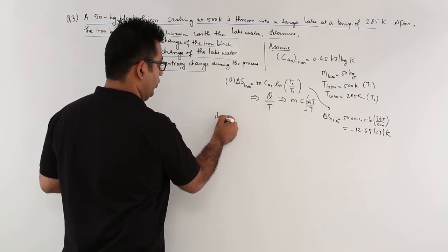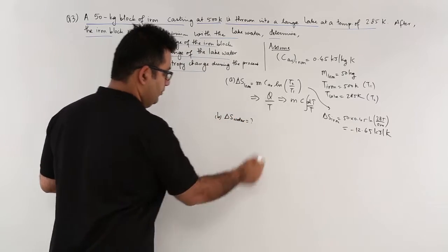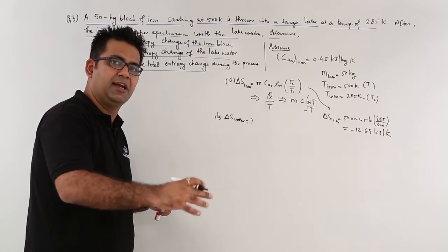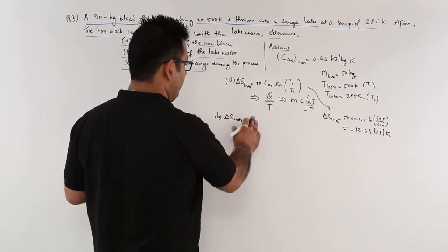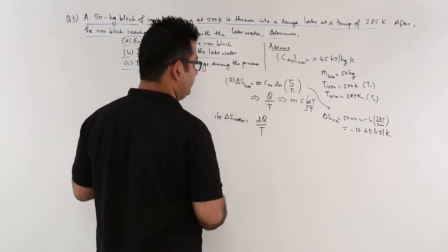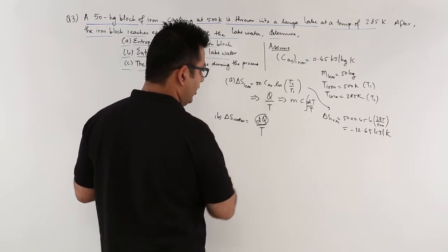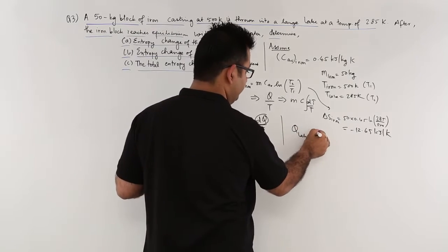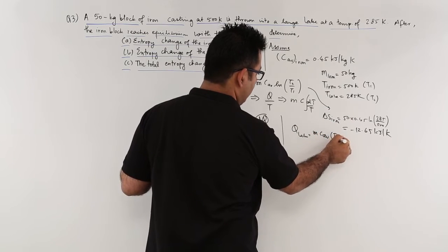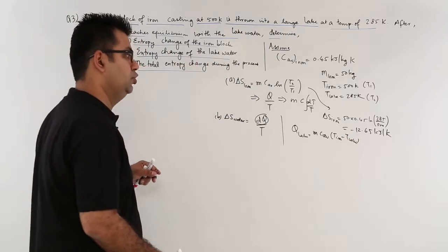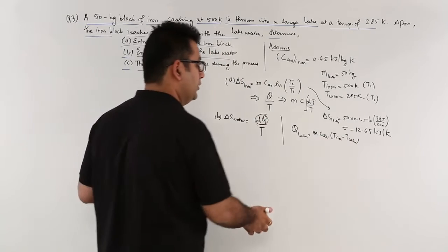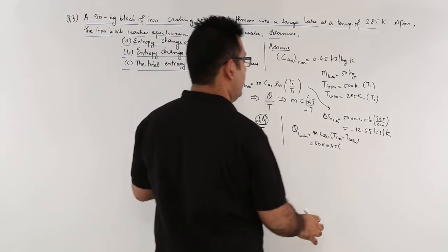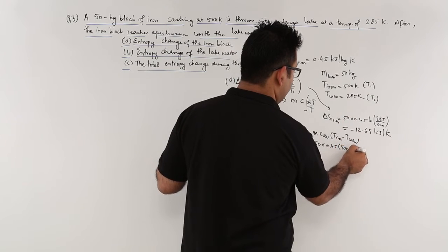The second part of the question is the entropy change for lake water. The amount of heat lost by iron equals the amount of heat gained by the lake water, so we can use dQ by T. First, let's find Q for the lake: Q_lake equals M into C_av into T_iron minus T_lake — that is the heat lost by the iron block: 50 into 0.45 into 500 minus 285.